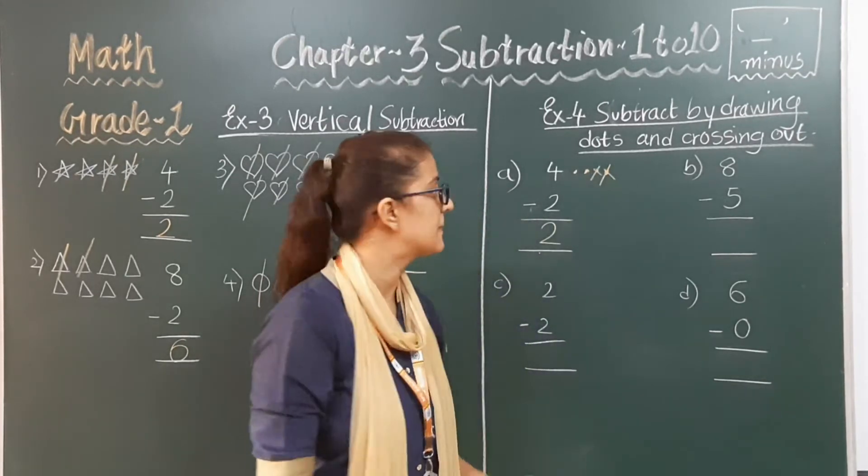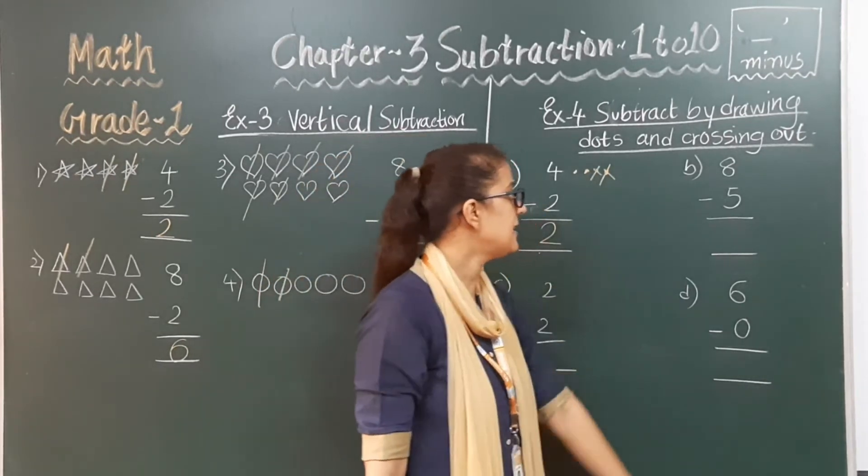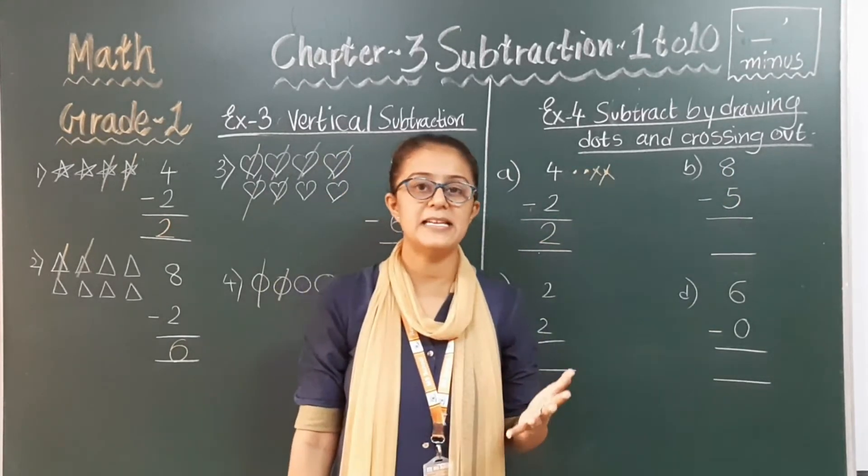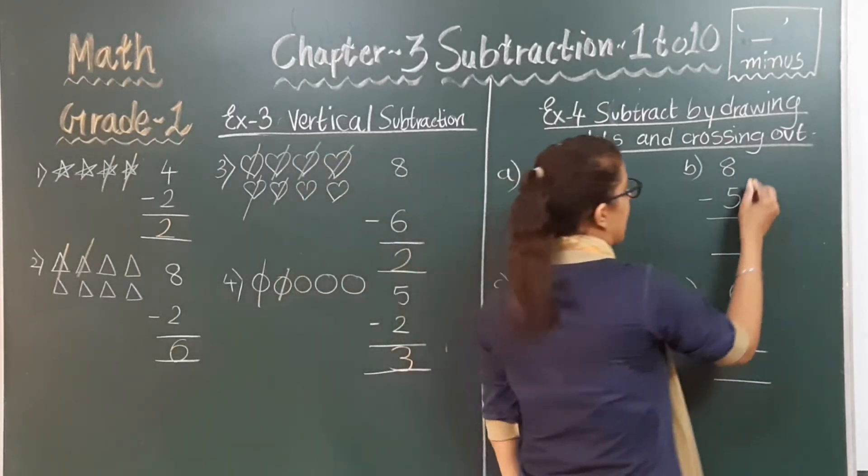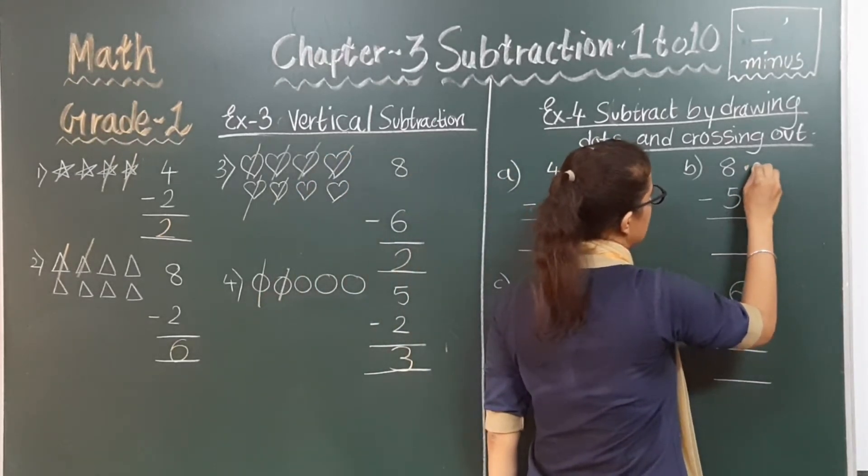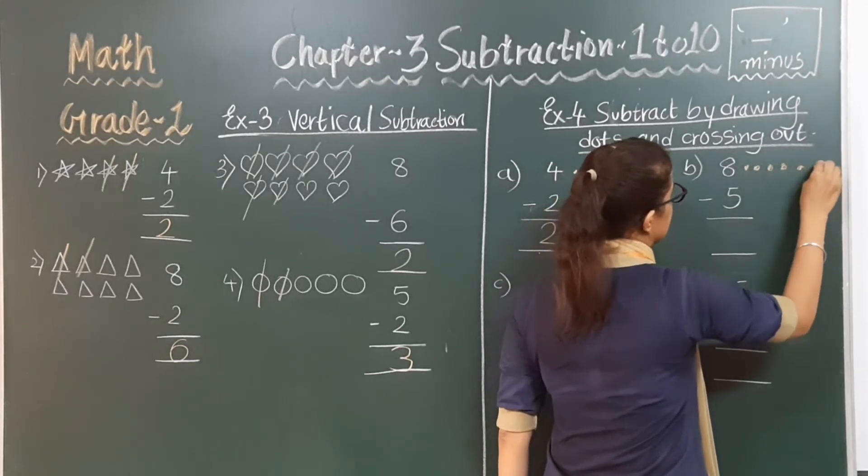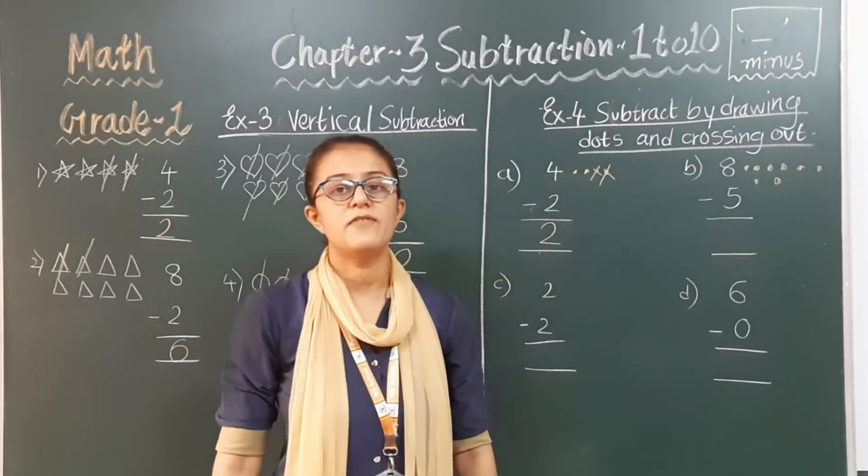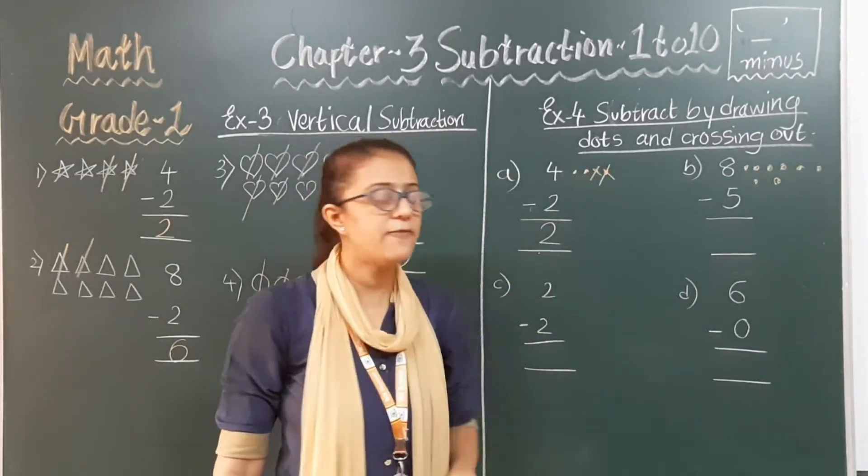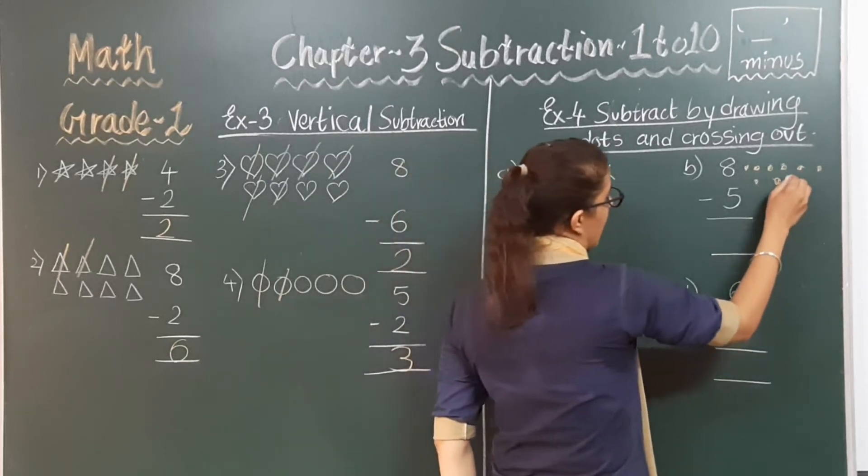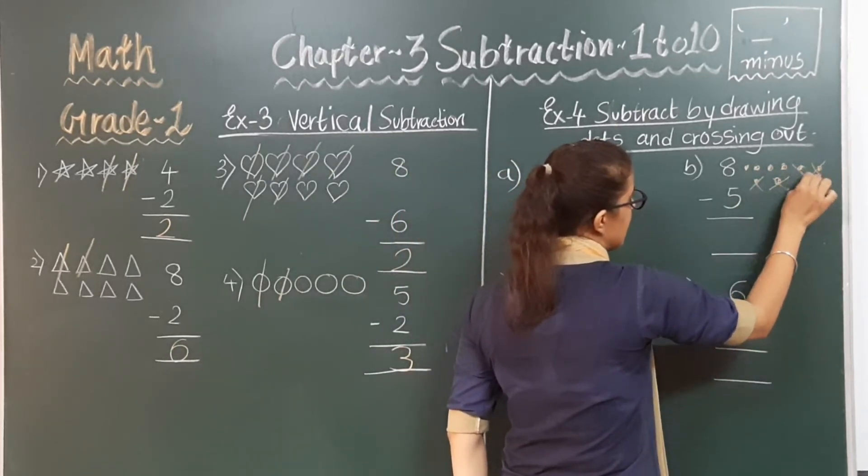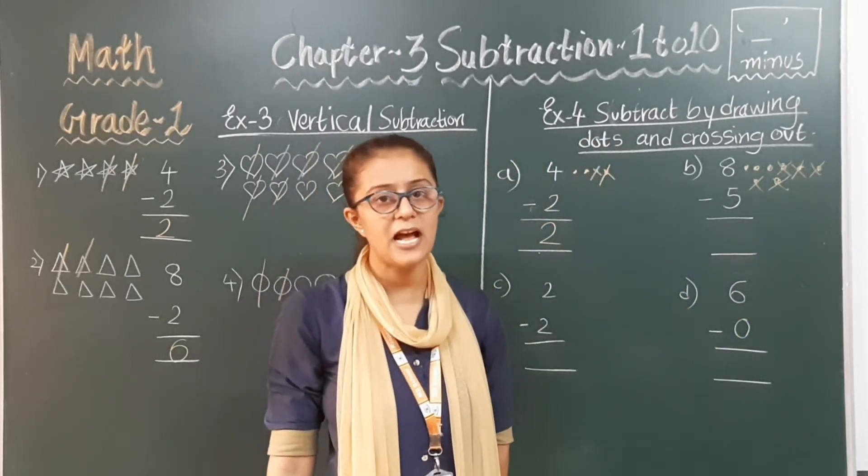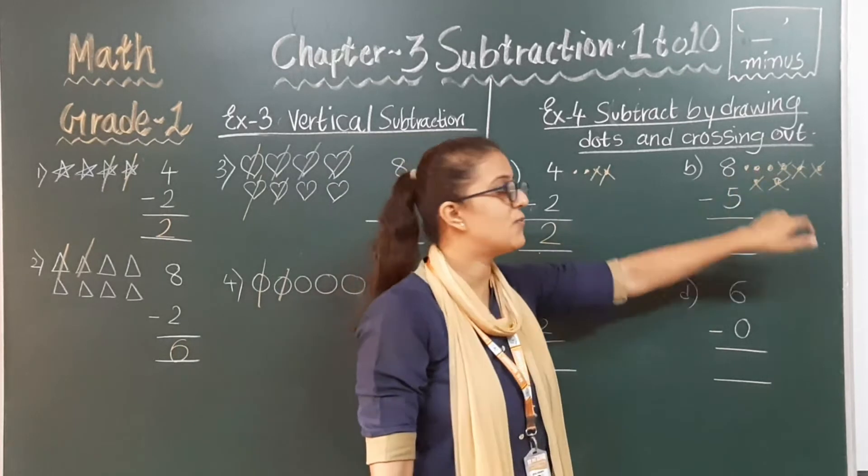Number second. 8 minus 5. From 8 we have to minus 5. So we have to draw first of all 8 dots. One, two, three, four, five, six, seven, eight. Now from this 8 dots we have to do minus 5 dots. One, two, three, four and five. So how much total is left now? One, two and three. Yes, total how much left? That is 3. So 8 minus 5 is equal to 3.